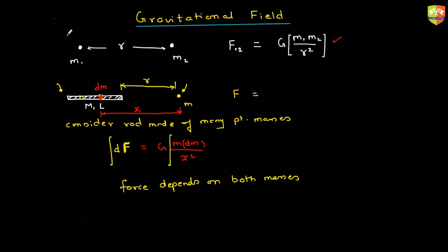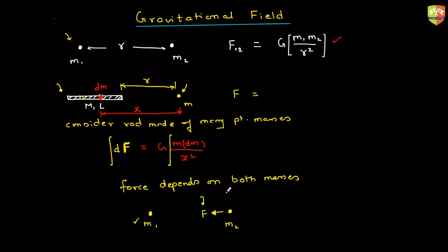The force between m1 and m2 is a function of both m1 and m2. But I want to find a function which is only of m1. Mass m2 experiences a force because of the presence of m1 — if you remove m1, the force becomes zero.